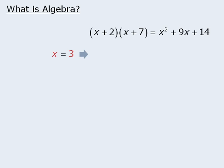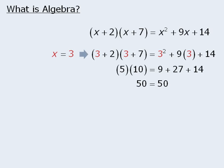For example, when x equals 3, the evaluation of x plus 2 times x plus 7 must equal the evaluation of x squared plus 9x plus 14. In this case, both expressions evaluate to be 50 when x equals 3.